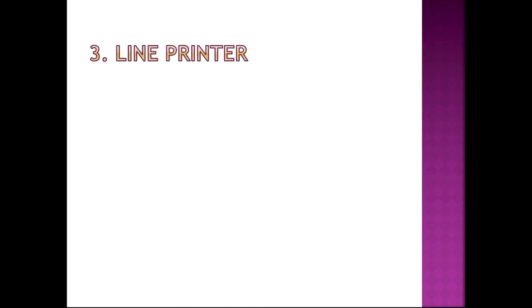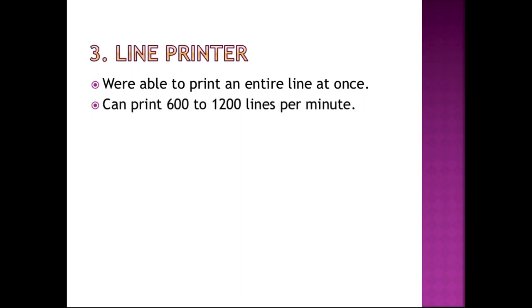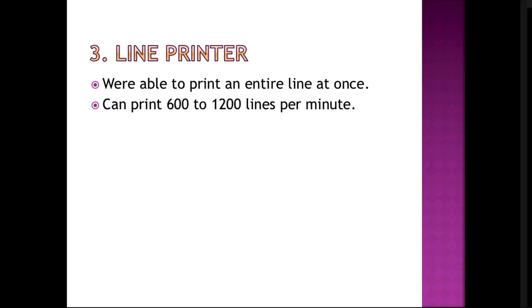The third impact printer is the line printer. They are able to print an entire line at once and can print 600 to 1200 lines per minute.